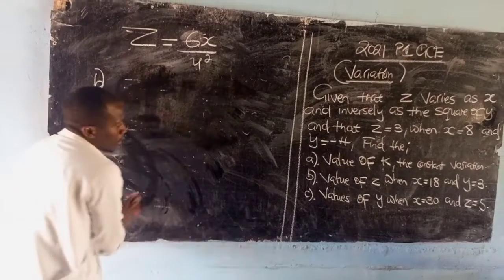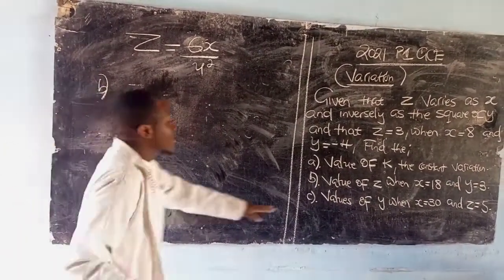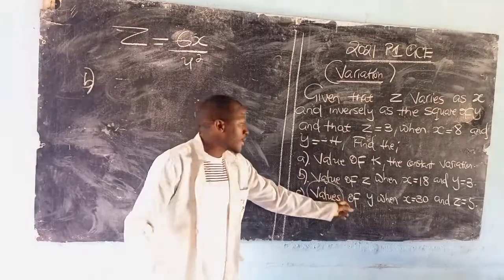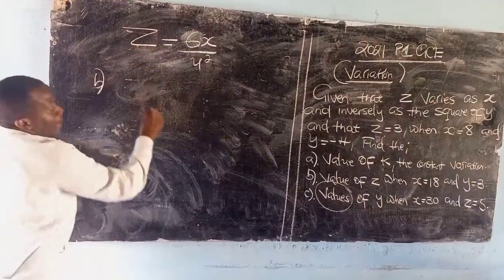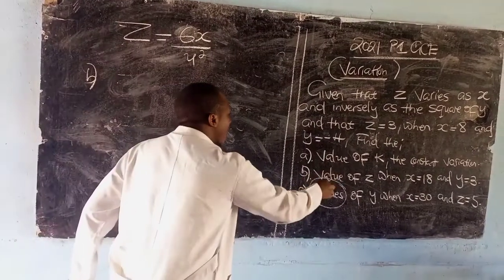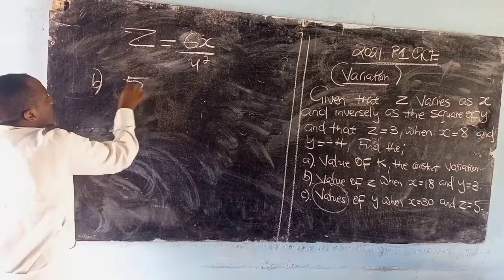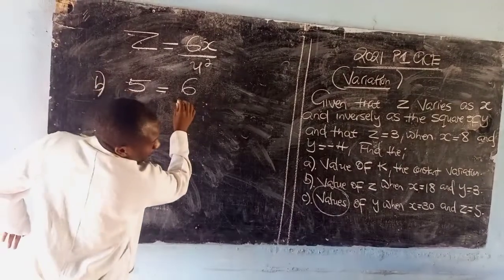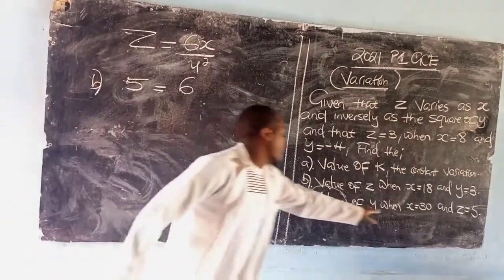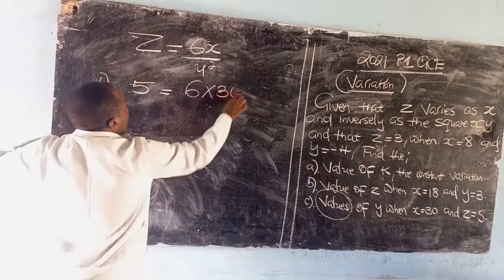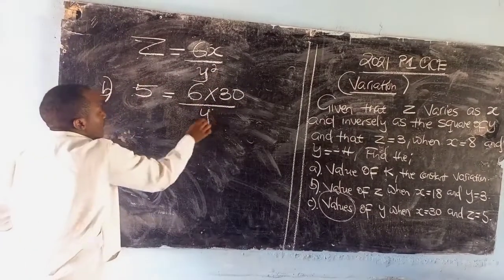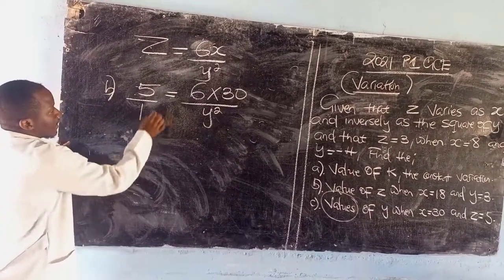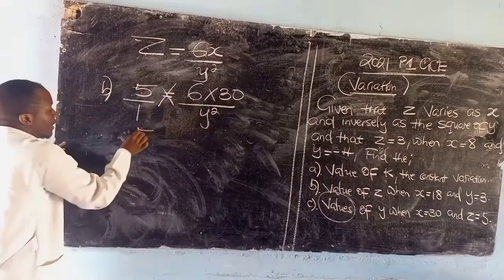Now we are going to go for part C, which says find the values of y. Remember even the word itself here is values plural, that means we are finding two values of y. But this time around they are saying z is 5, then x is 30. So here we are going to replace it with 5 equals 6 then times 30 over y squared. Then I am going to say over 1, then I am going to say this is the same as saying 5 times y squared equals 6 multiplied by 30.